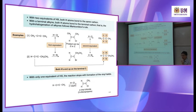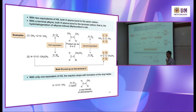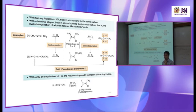The final product has both H atoms added to the same carbon and both Cl atoms added to the same carbon — this is the geminal dihalide. The reason both halogens end up on the same carbon is that the reaction follows Markovnikov's rules, involving the formation of a carbocation intermediate.